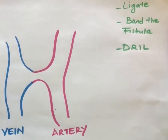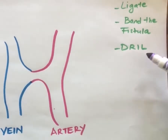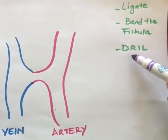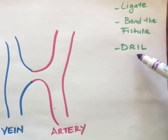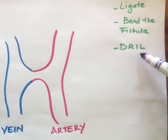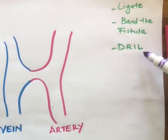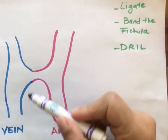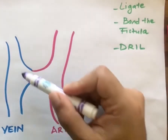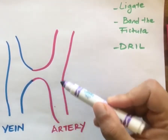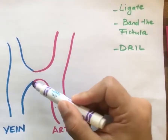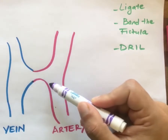Today we're going to talk about the DRIL procedure: distal revascularization and interval ligation. This is your AV fistula — this is the vein side, this is the artery side, and this is your anastomosis.